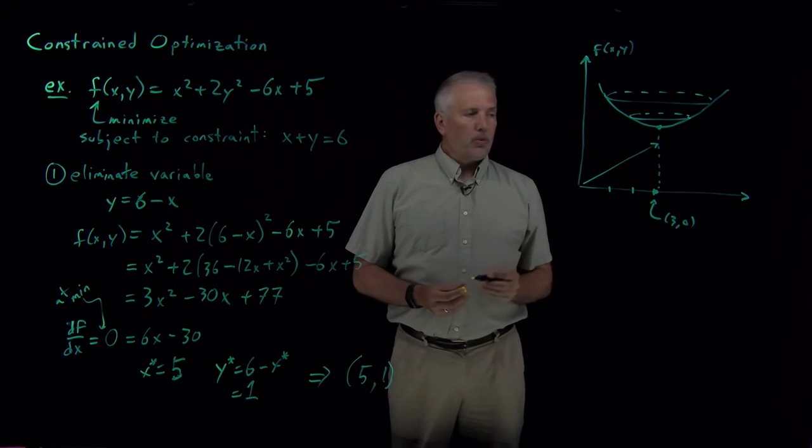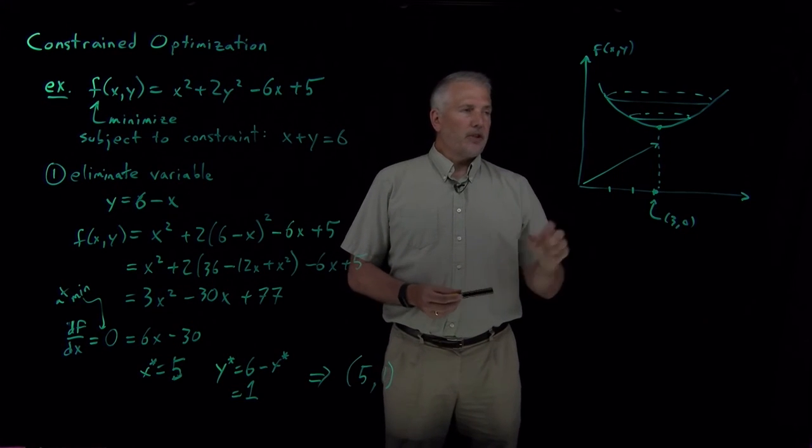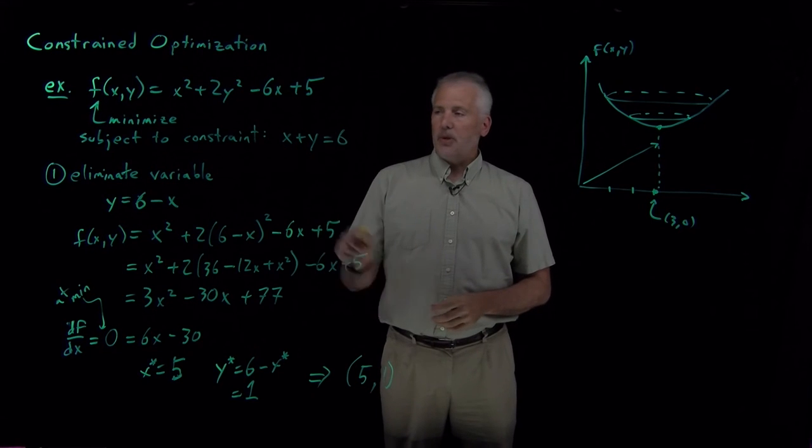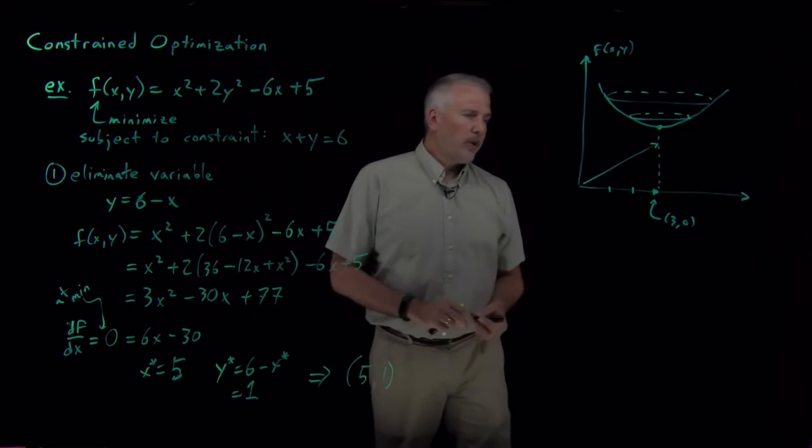But that's not what we're interested in, finding the bottom of this parabola. What we're interested in is finding the point on this function that obeys the constraint. So this constraint, x + y = 6.